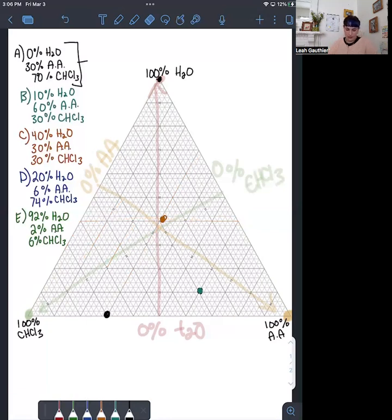Then I'll just double check chloroform. We have 0%, 10%, 20%, 30%. And that one lines up as well, so we have the right data point.